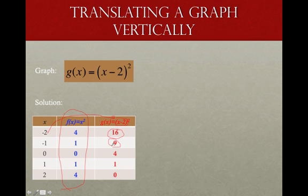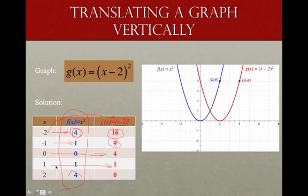And so what I'm wanting you to see is we're shifting. What was getting the value of a 4? Negative 2 was going to negative 4. Now 0 is going to 4. Negative 1 was going to 1, but now 1 is going to 1. And so do you see how we have actually shifted to the right 2 units?